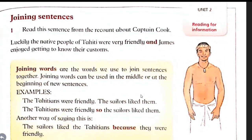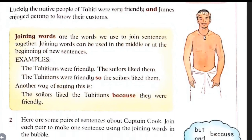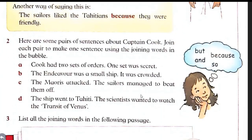There are a lot of other joining words like 'and', 'so', 'because', and 'but'. By using these four joining words, I am going to complete this question. Cook had two sets of orders and one set was secret — 'Cook had two sets of orders and one set was secret.'